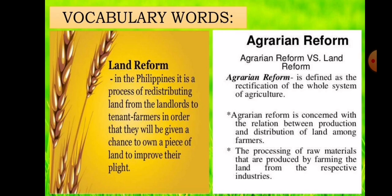Second, we have agrarian reform. It is defined as the rectification of the whole system of agriculture. If in land reform the concern is only about the land, in agrarian reform it's the whole system of agriculture. Agrarian reform is concerned with the relation between production and distribution of land among farmers, and also the processing of raw materials produced by farming from the respective industries. So agrarian reform concerns not only land distribution but also the processing of farm products.